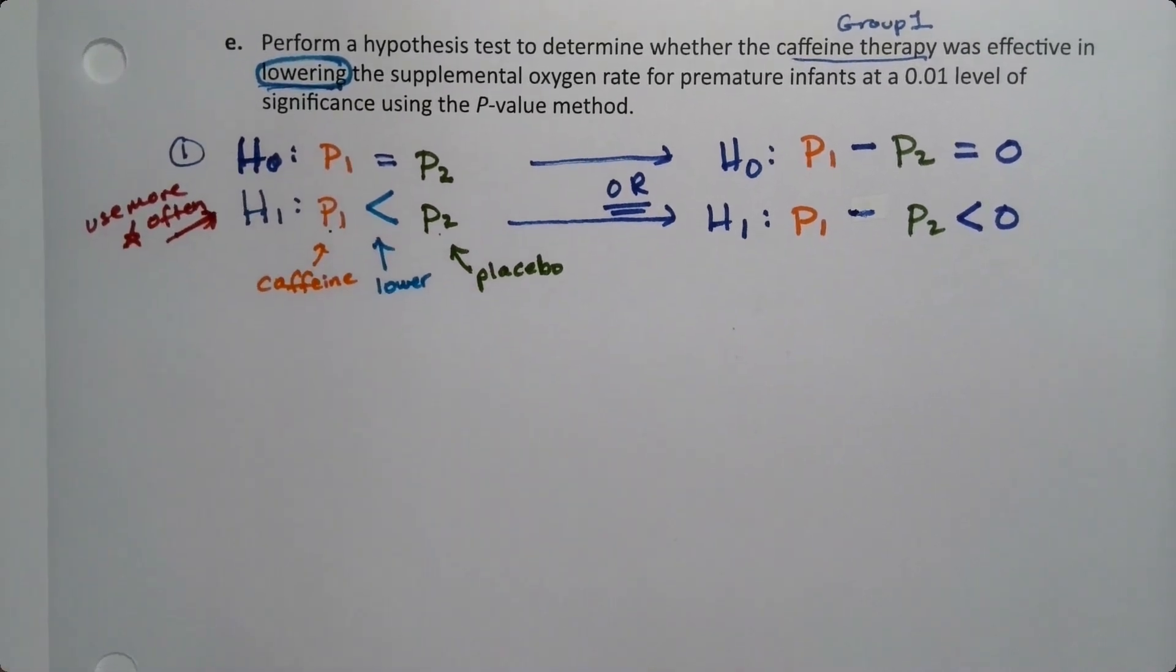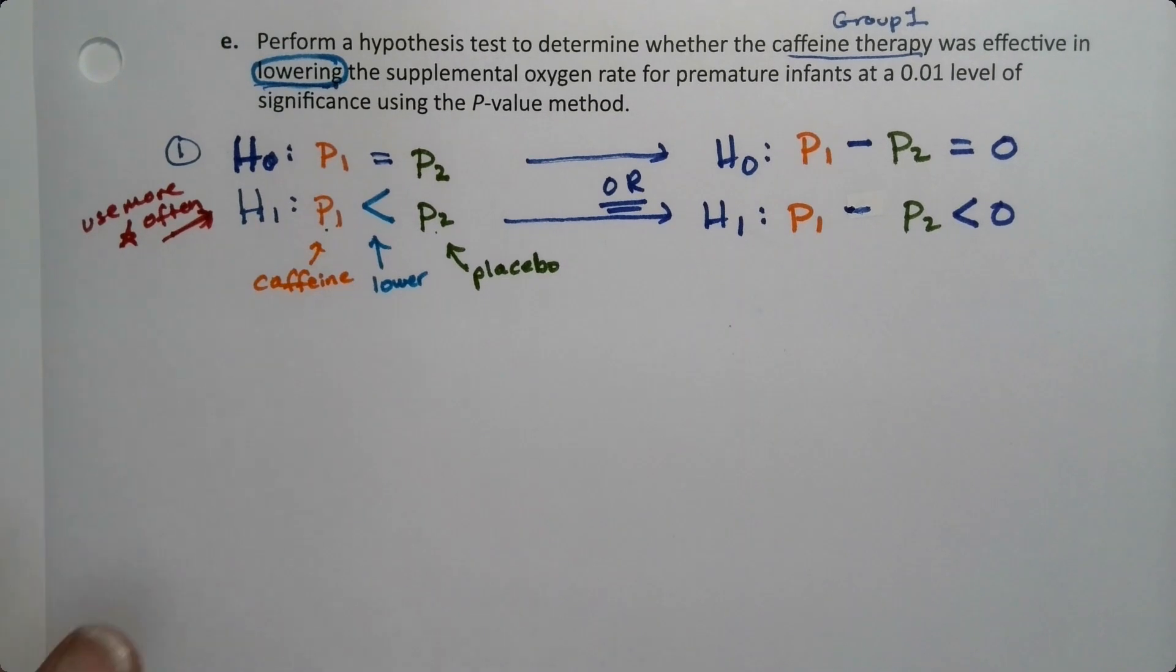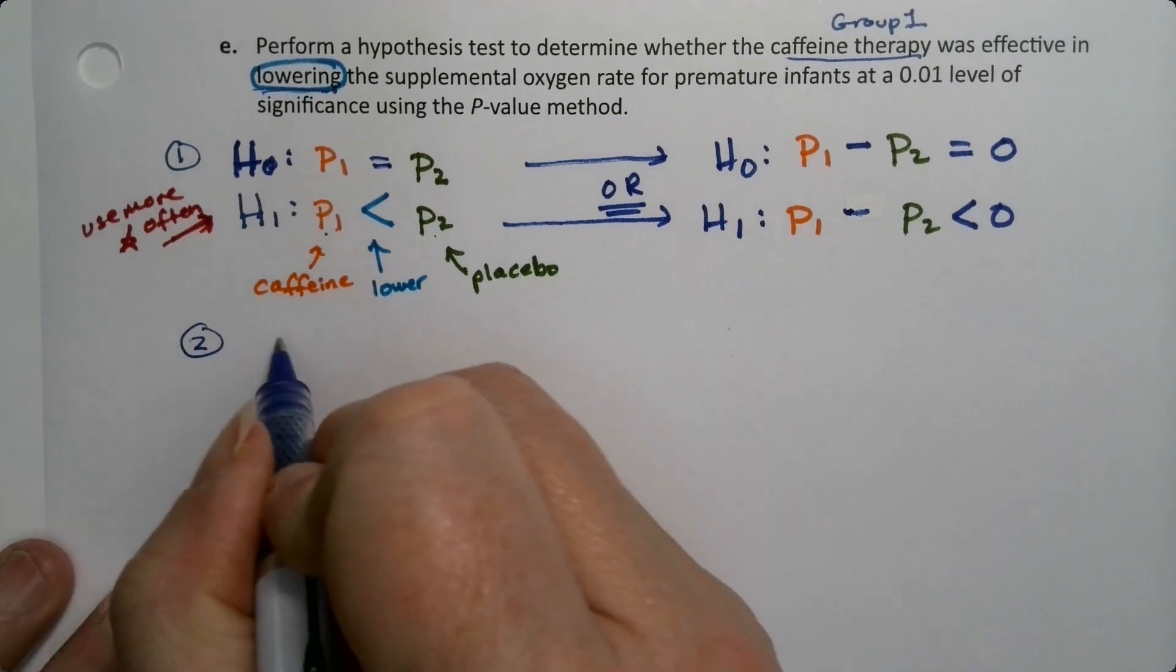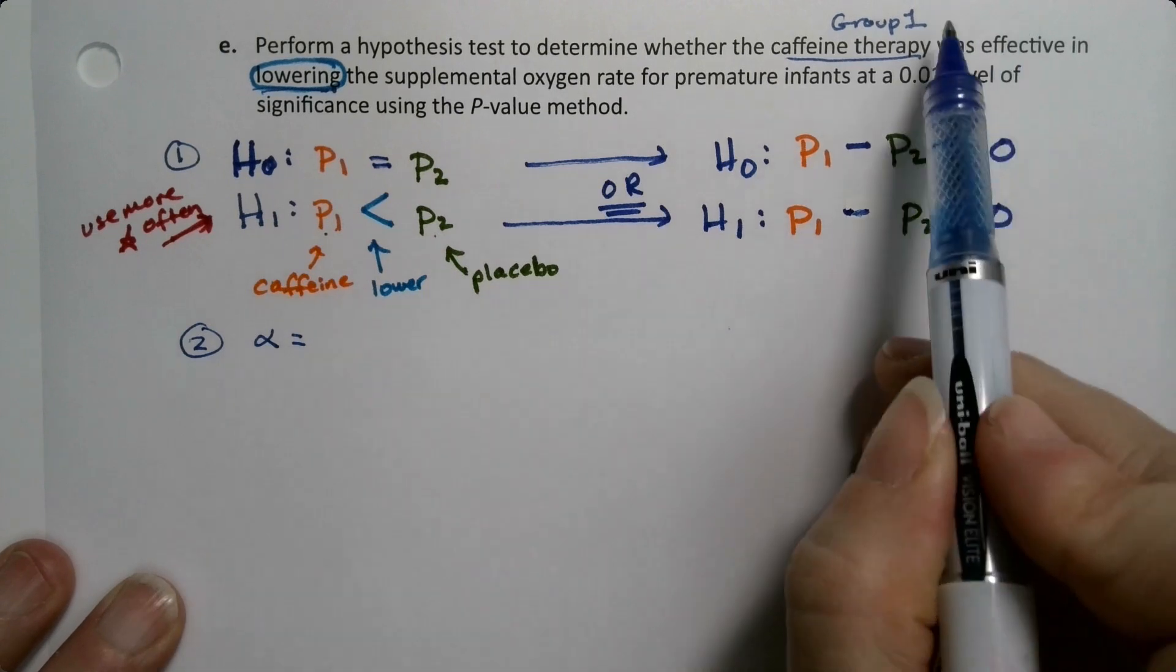So that was a little bit of work, but step two is alpha and alpha is the probability of a type one error which is right here. Done.